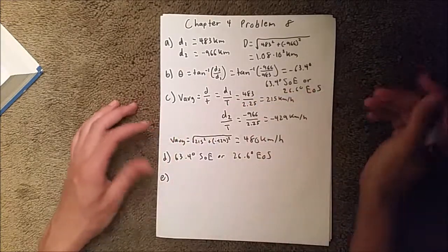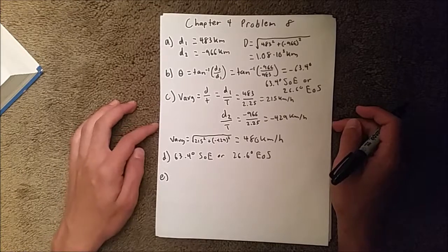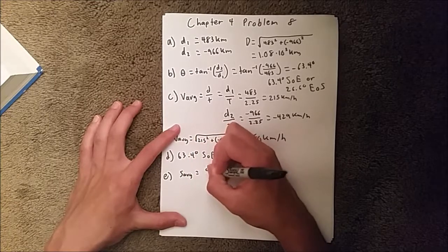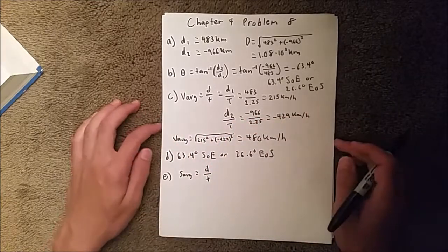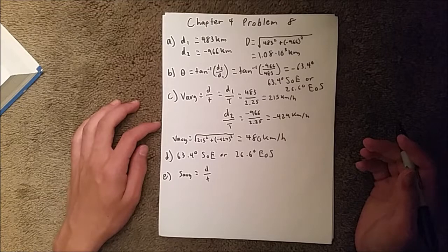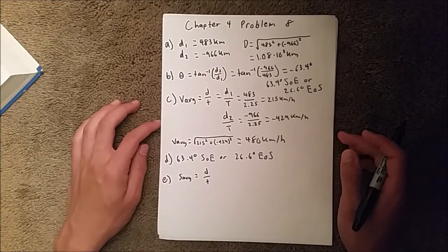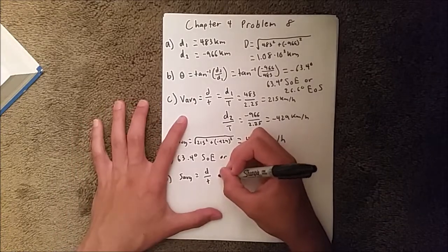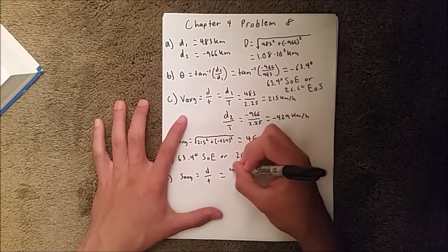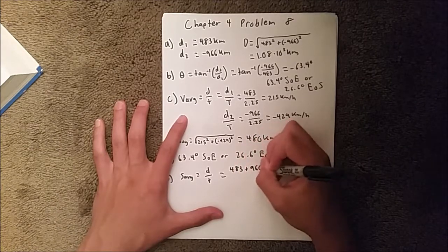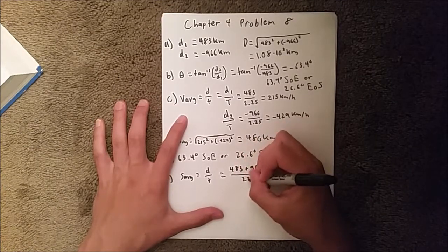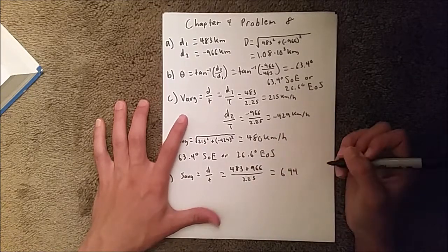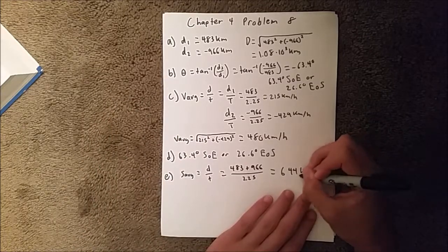Now, lastly, for part E, we are asked to find its average speed. And again, we know that speed equals distance over time. And since speed is separate from direction, like direction is not relevant, we can just say total distance over total time. So, 483 plus 966 kilometers over 2.25 hours gives us 644 kilometers per hour.